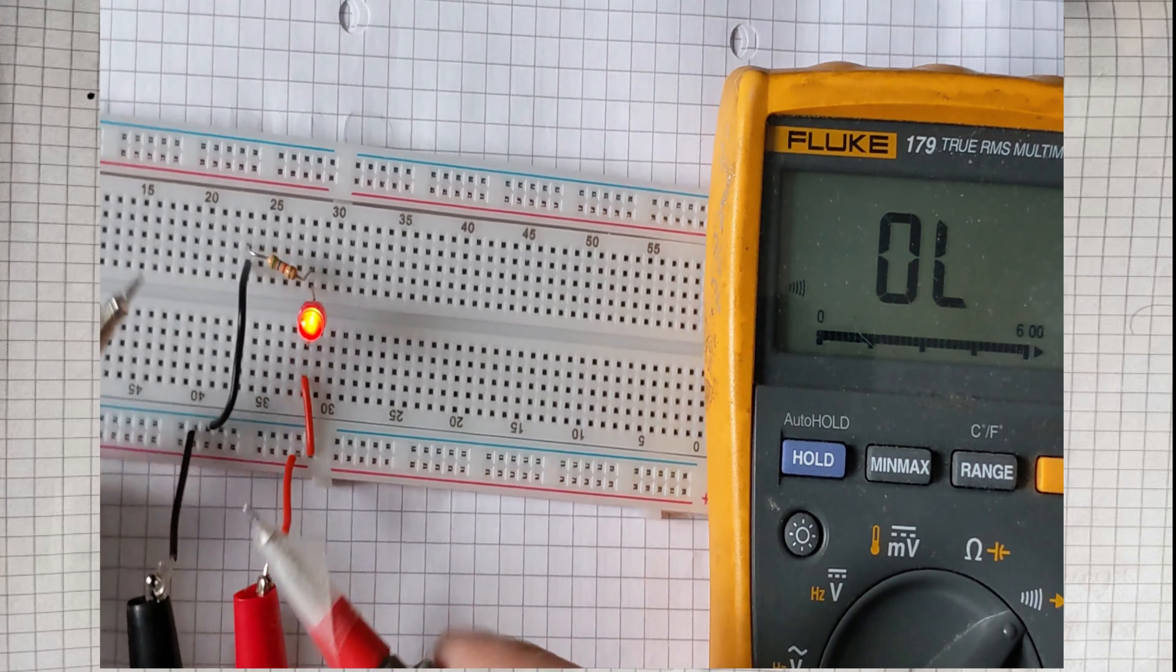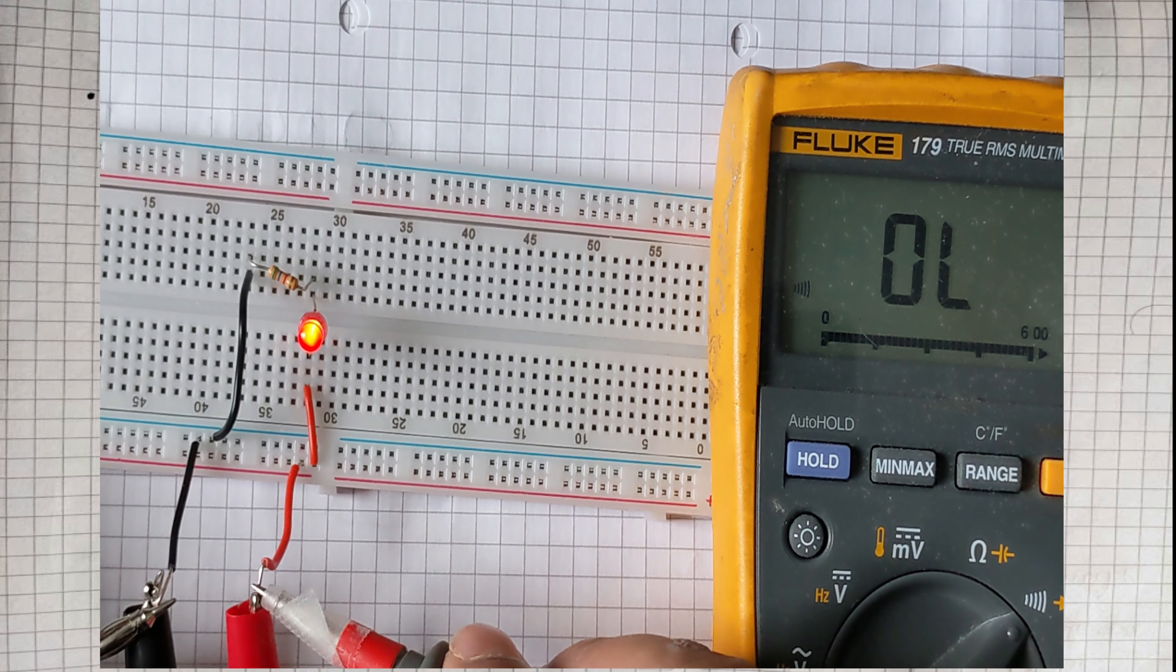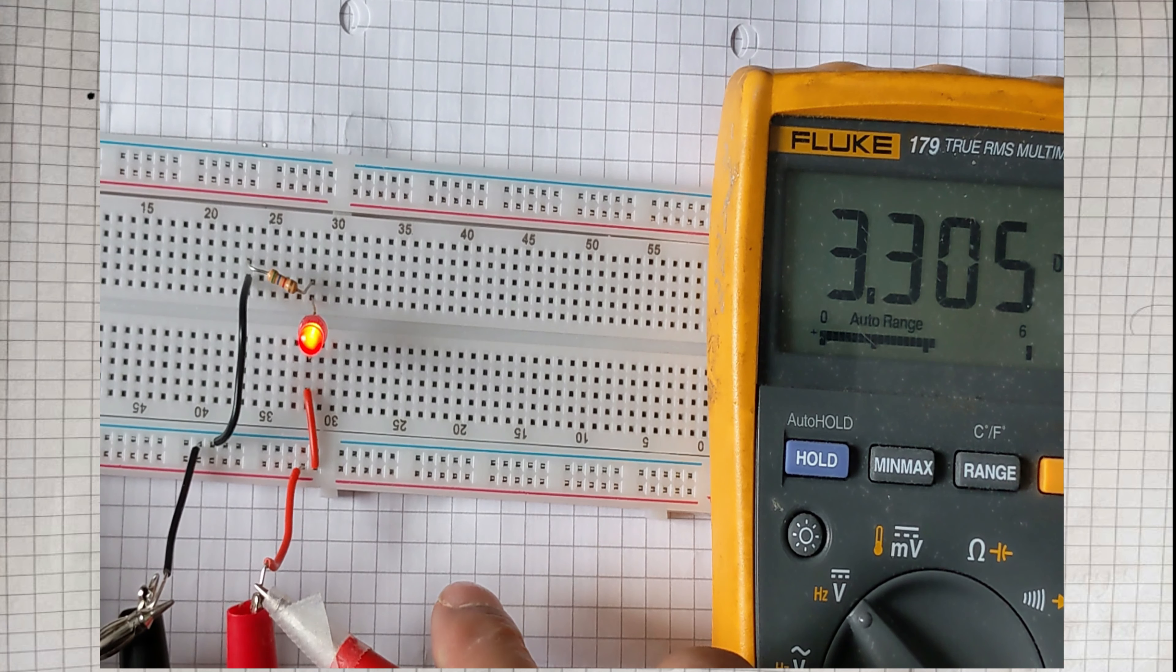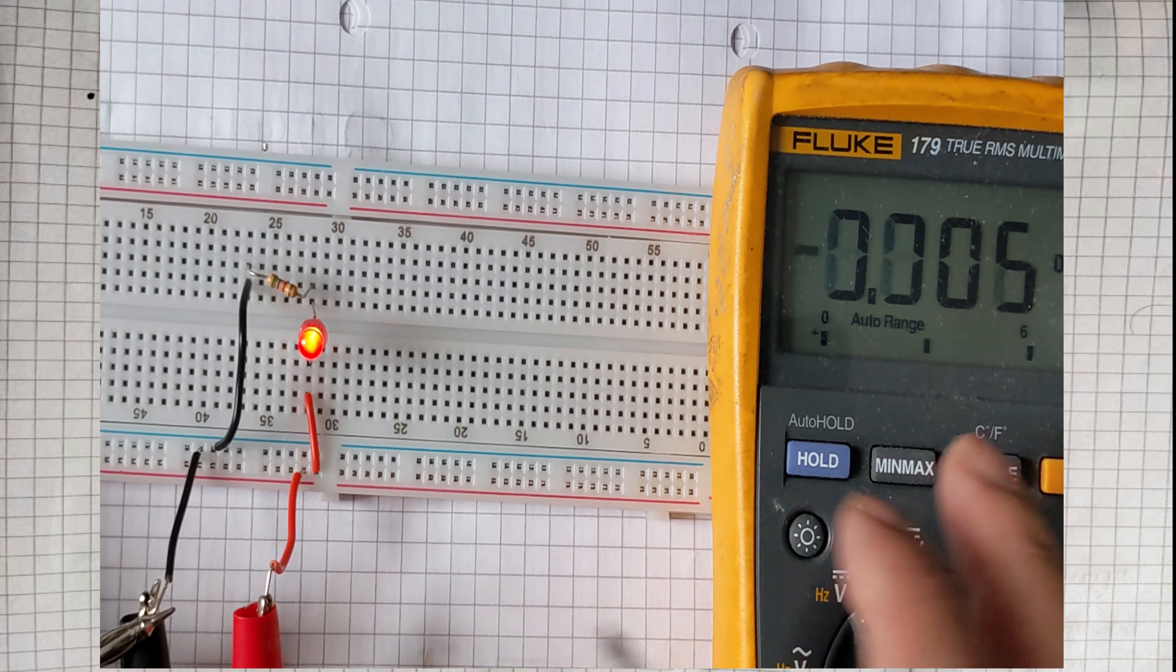In this video I will explore how to use an NPN transistor as a switch. This is a simple LED circuit where I'm injecting 3.3 volts with the red wire to the LED, all the way to the resistor and the ground cable.